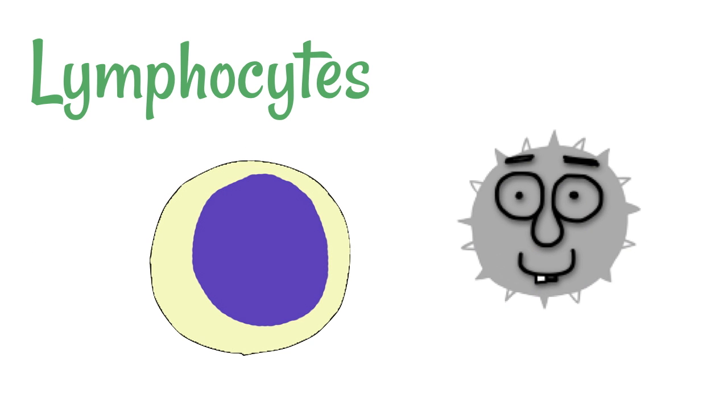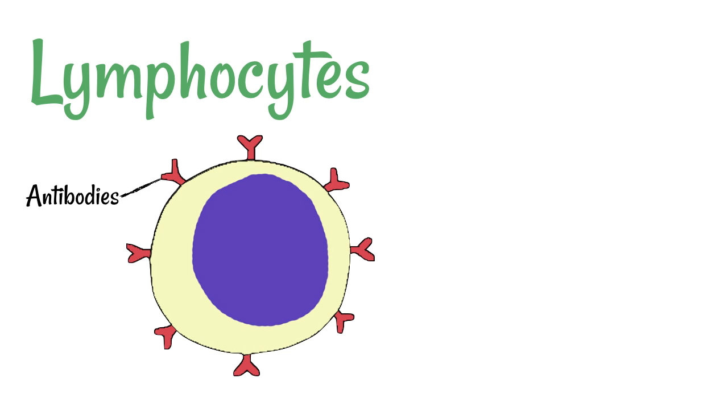When a pathogen invades the body, lymphocytes are capable of producing antibodies which can result in the destruction of the pathogen. But the problem is, there are lots of different types of lymphocyte in the body all producing unique antibodies, and each pathogen needs a very specific antibody to destroy it.